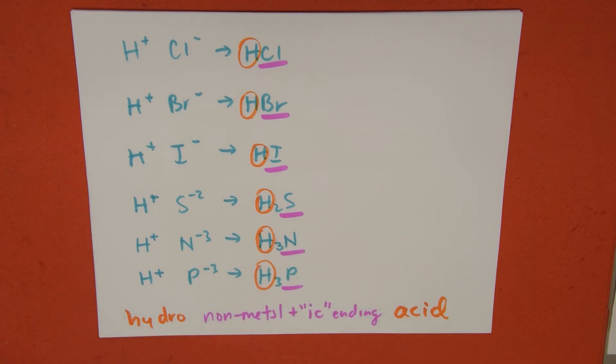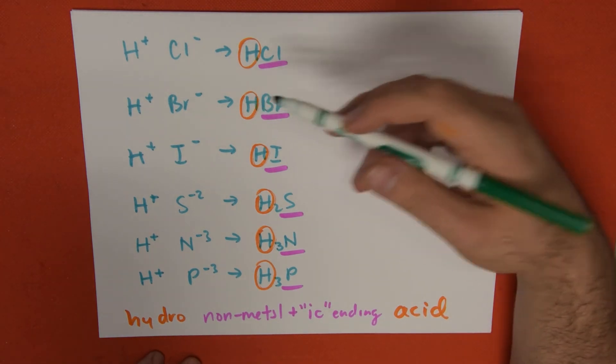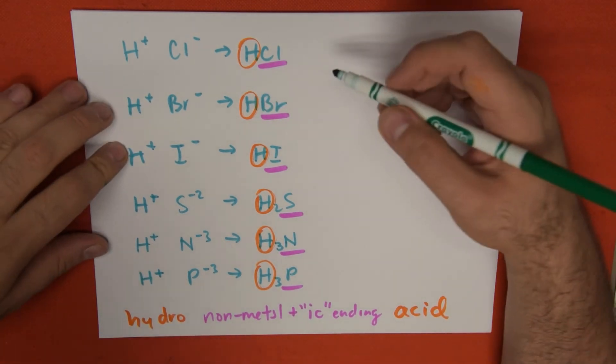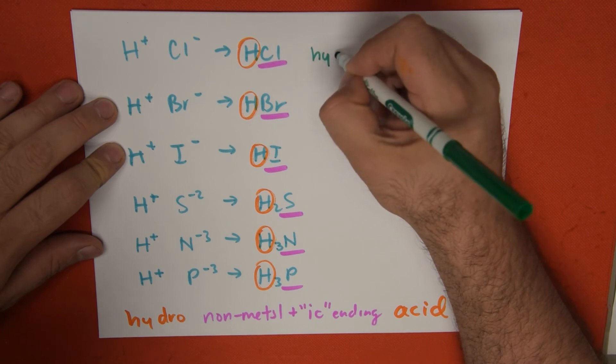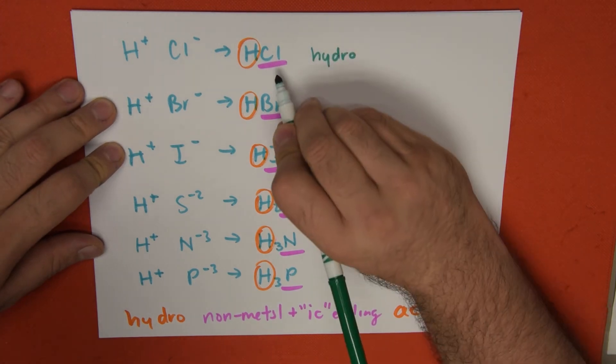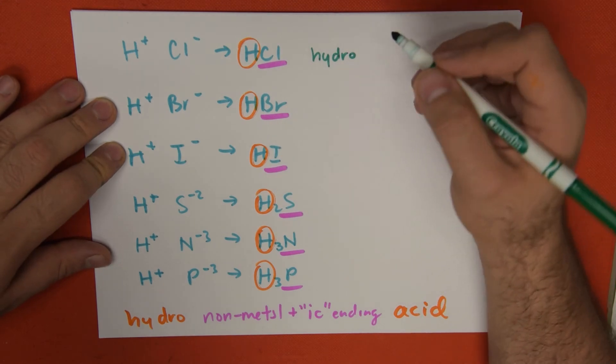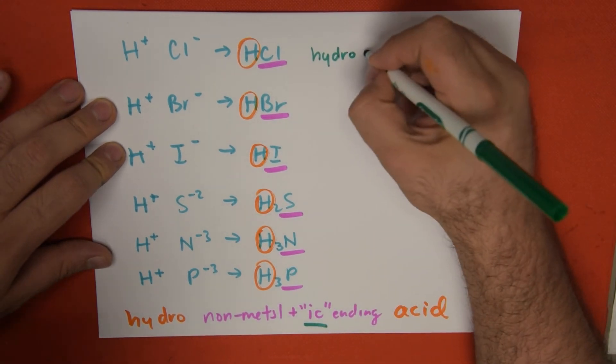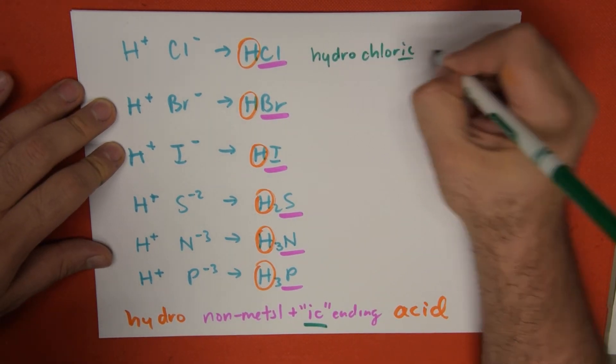We're going to finish this really quickly because this is really simple. The hydrogen turns into hydro and acid, so we begin with hydro. The name of the non-metal is chlorine. Chlorine turns into chloric with the -ic ending. Hydrochloric acid.